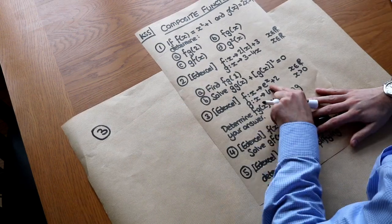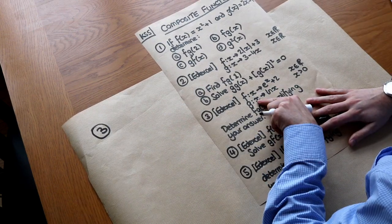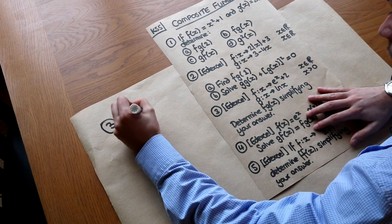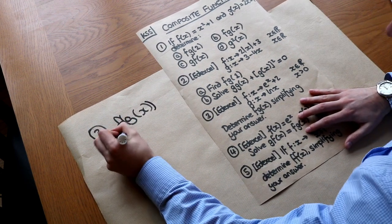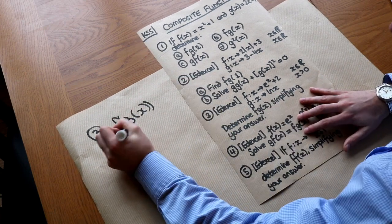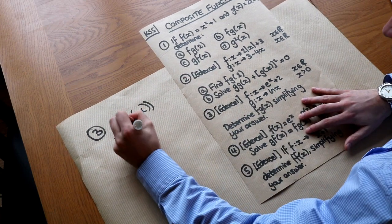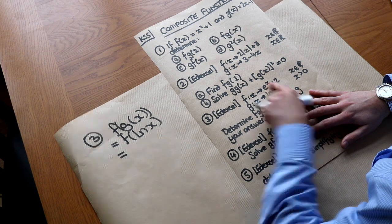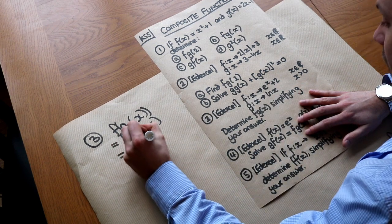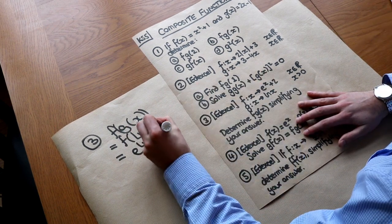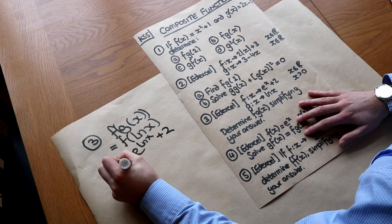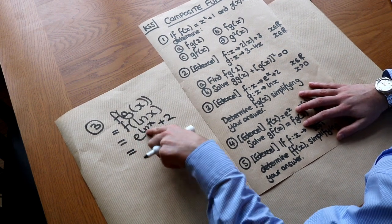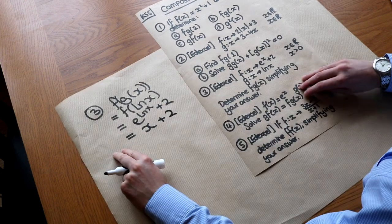Question 3: f(x) = e^(x+2) and g(x) = ln(x). Find f(g(x)). g(x) = ln(x), so we compute f(ln(x)) = e^(ln(x) + 2). Since e^(ln x) simplifies to x, we get f(g(x)) = x · e² — or more precisely, e^(ln x + 2) = x · e².